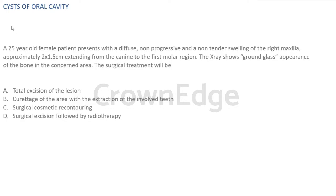The most important thing is thorough knowledge and clear concepts. I'd like you to be thorough with oral medicine, oral pathology, and radiology for every lesion. For cysts, start from the etiology and pathogenesis so you understand the course of the disease. Knowing the direction of the disease helps you decide what treatment is essential, and radiology is very important for arriving at a proper diagnosis.